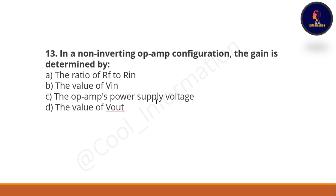Next question: In a non-inverting op-amp configuration, the gain is determined by what? Option A: the ratio of Rf to Rn. Option B: the value of Vin. Option C: the op-amp's power supply voltage. Option D: the value of V-output. The correct option is the ratio of Rf to Rn.